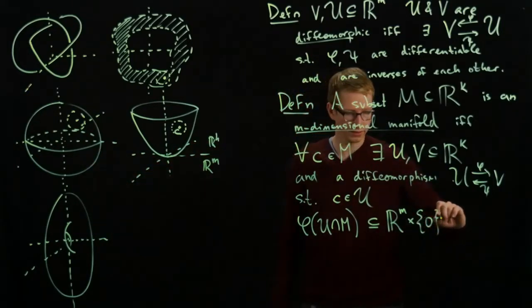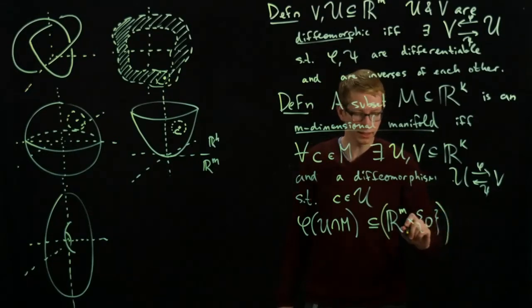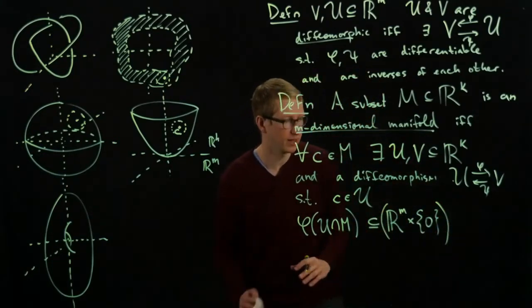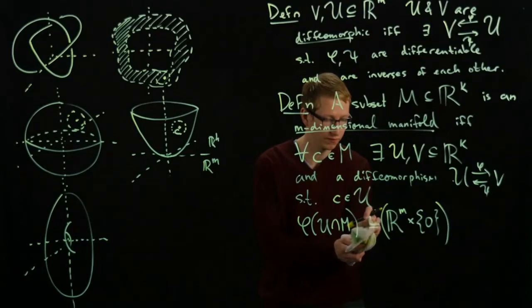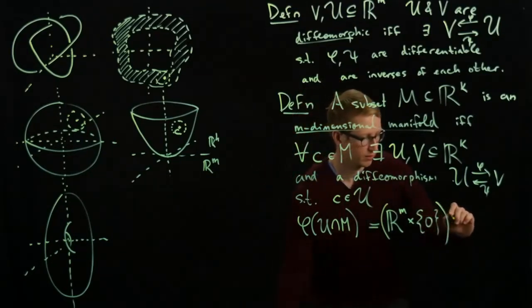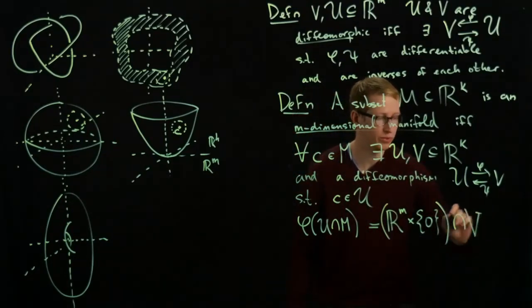It's going to be a subset of the plane right here. And in fact, it's going to be a subset in this sense, but it'll actually equal this set when we intersect with K.